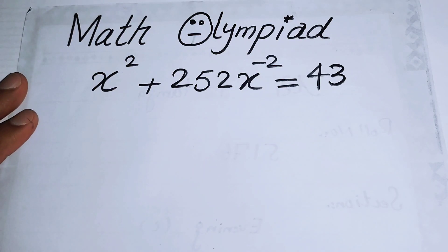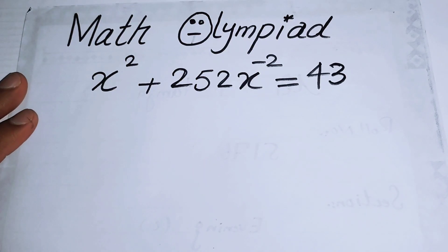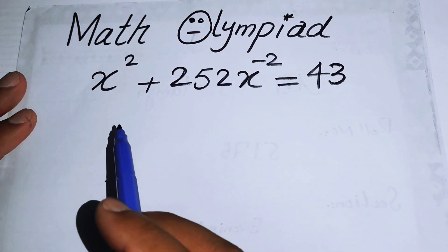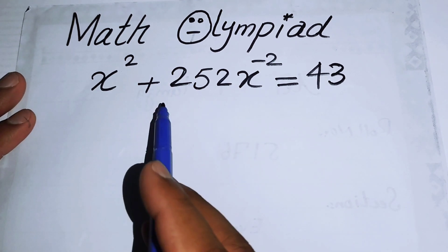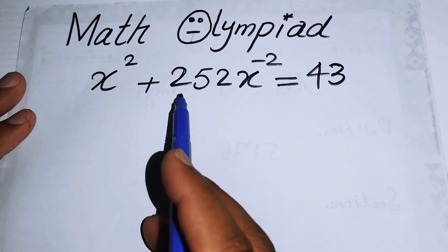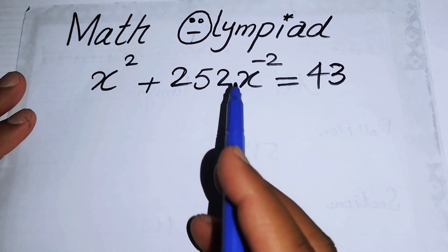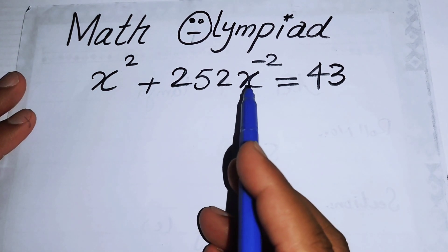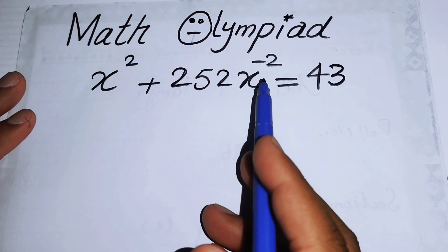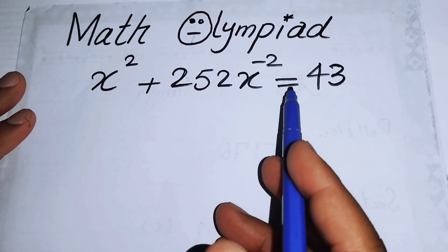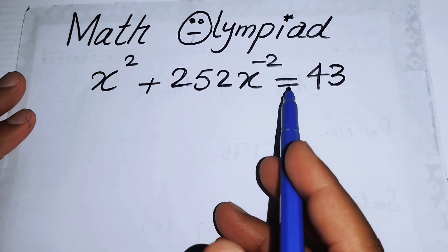Hello everyone, welcome back to the Map of Mathematics. In this video we are going to solve this nice algebra problem: x² + 252x⁻² = 43.